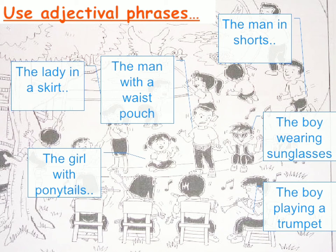Then you need to use adjectival phrases. A phrase is a group of words, and an adjectival phrase is a phrase that can describe a noun. If you are talking about a person or any object, you use a group of words to explain what type of thing it is. For example, if you are describing a man wearing a waist pouch, you can use the adjectival phrase 'the man with a waist pouch.' Similarly, 'the girl with ponytails' points at that specific girl.